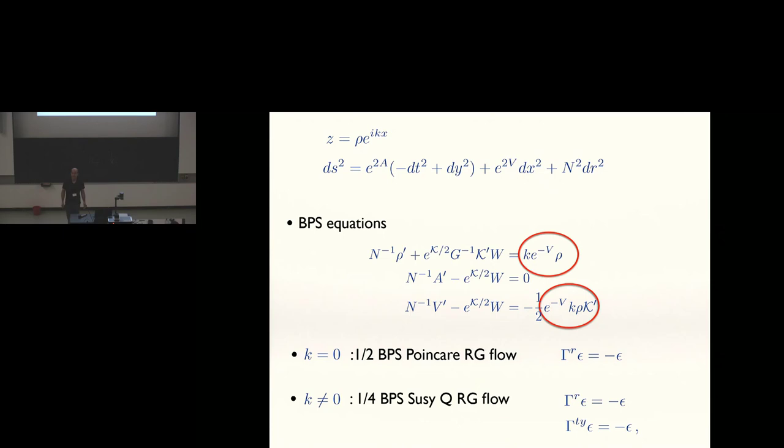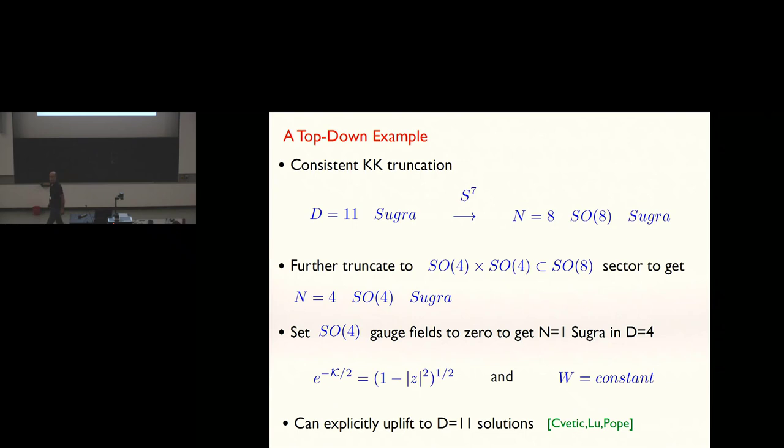Can you realize this in top-down? And the answer is yes, and there's a very nice realization. Let me remind you, we start off with 11-dimensional supergravity, and if we reduce on a 7-sphere consistently, we get to N equals 8 gauged supergravity. What consistently means is that any solution of that latter theory uplifts to an exact solution of 11-dimensional supergravity.